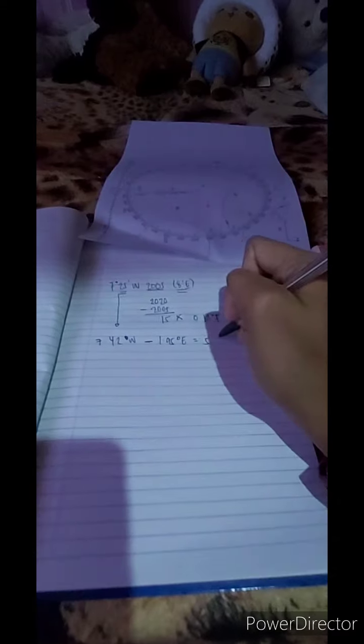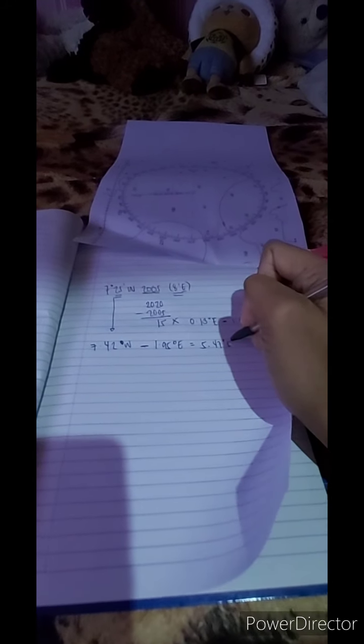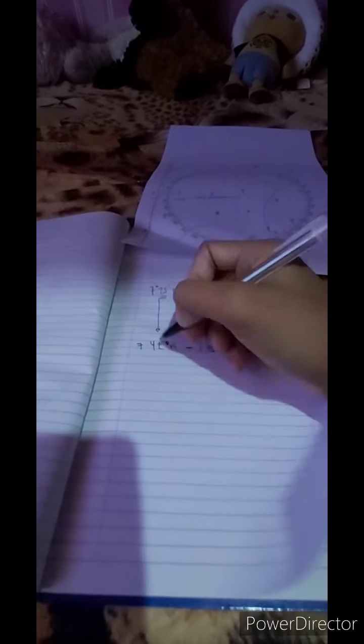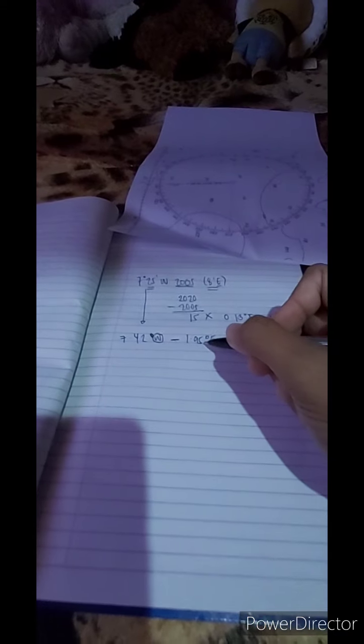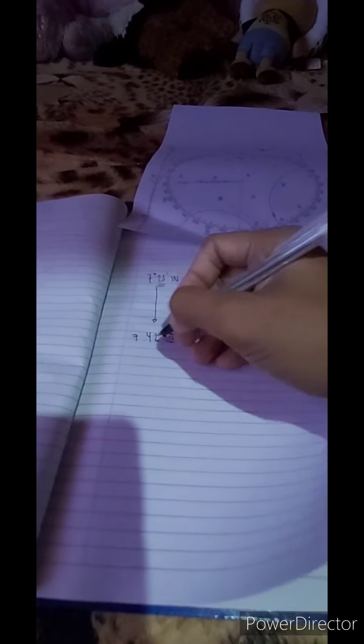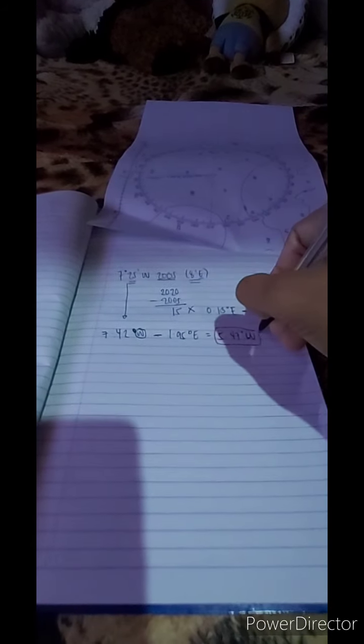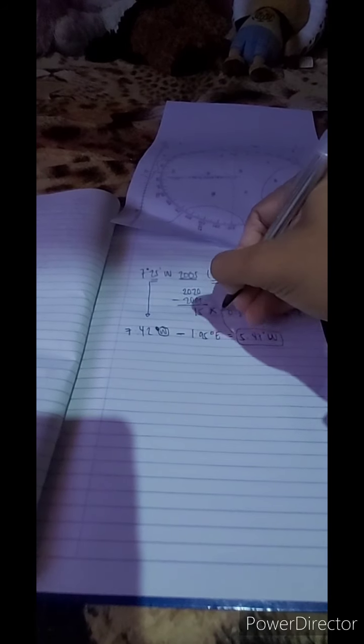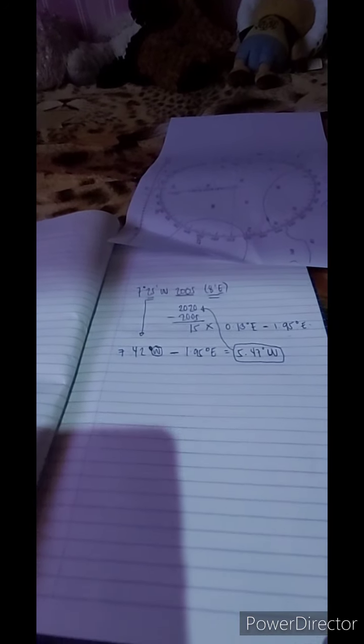5.47, 5.47 degrees west. Why west? Because you take the higher value. 7.42 is higher than 1.95, so take the name of the higher value, which is 7.42, which is west. This is your variation for the present year, which is 2020. That's it. Thank you.